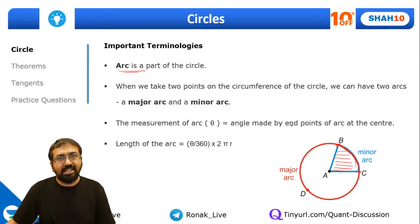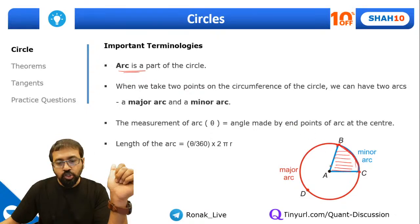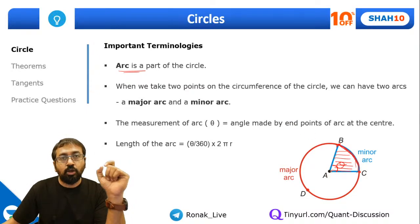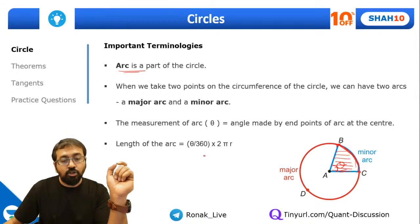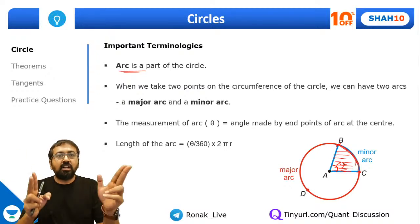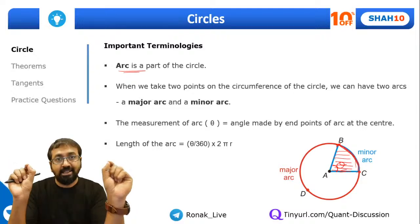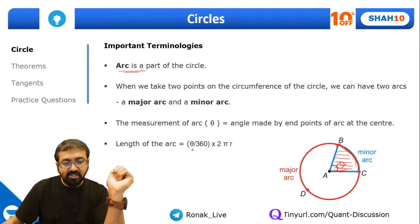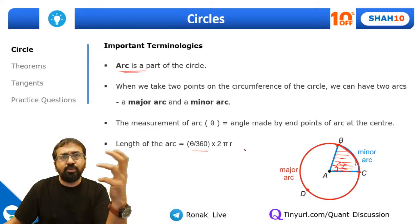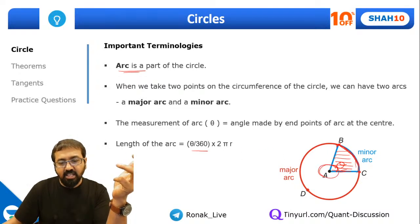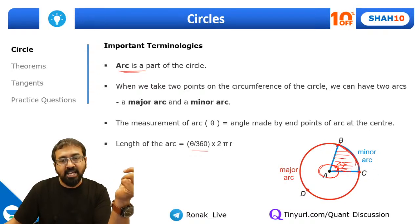There are two types of measurement for an arc. One is the angular measurement — the angle made by that arc at the center, call it theta. The length of the arc is theta upon 360 into 2πr. When the complete angle is 360 degrees, the complete circumference is 2πr, so for angle theta it is theta/360 × 2πr.